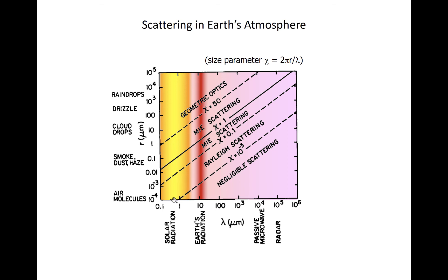For example, visible light, which is centered around 0.6 microns, is scattered by smoke, dust, and haze.